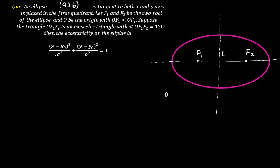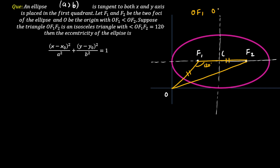A triangle O-F1-F2 is formed. Connecting F1 and F2, this triangle is an isosceles triangle, and the angle O-F1-F2 is given as 120 degrees. Since it is an isosceles triangle, two of the sides will be equal. Since OF1 and OF2 are not equal, OF1 must equal F1-F2. Therefore OF1 equals F1-F2.